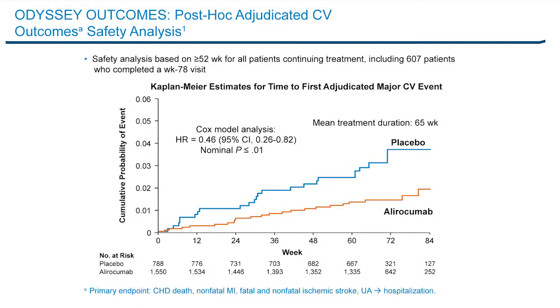Again recapitulating similar results — halving the rate of a composite of cardiovascular outcomes very similar to the ones I mentioned before. So all told, we have, albeit as an exploratory hypothesis in both of these studies, now about 100 events total between the two trials, with very nice data showing lower rates of cardiovascular outcomes with the addition of a PCSK9 inhibitor.